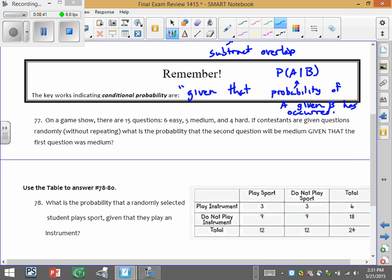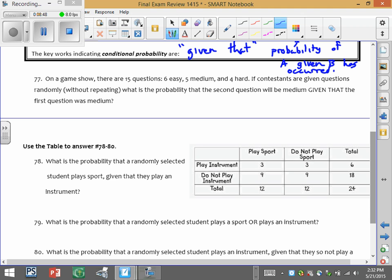So the magic words, given that. On a game show, 15 questions: 6 easy, 5 medium, 4 hard. Contestants are given questions randomly without repeating. So what's the probability of the second question is medium given that the first was? So this one, kind of think through it. Well, we know we've gotten rid of a question already, so we're down to 14 questions.